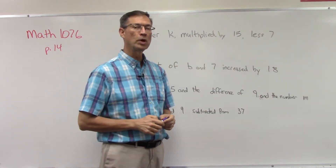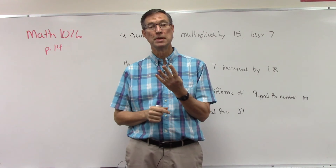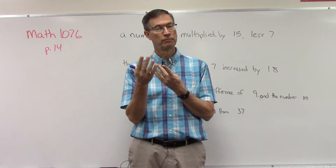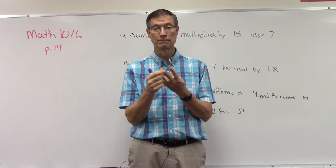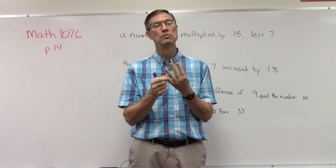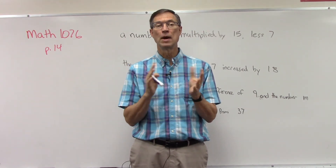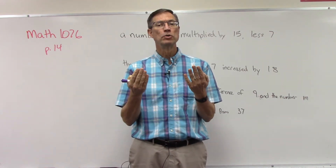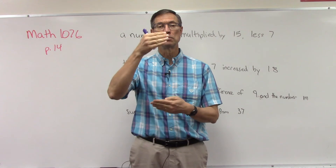Let's do a quick review: what do the terms sum, difference, product, and quotient mean? The sum is the answer to addition, difference is the answer to subtraction, product is the answer to multiplication, and quotient is the answer to division. For sum and product, the order of the numbers doesn't matter, but for difference or quotient, the order does matter — which one comes first or on top is important.